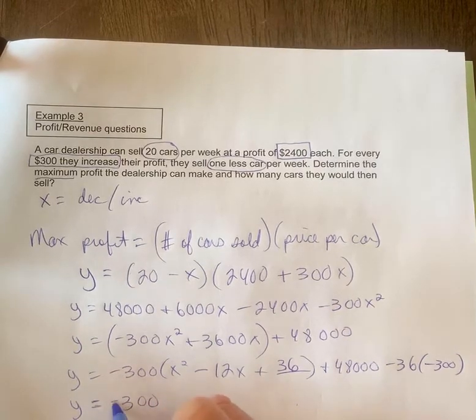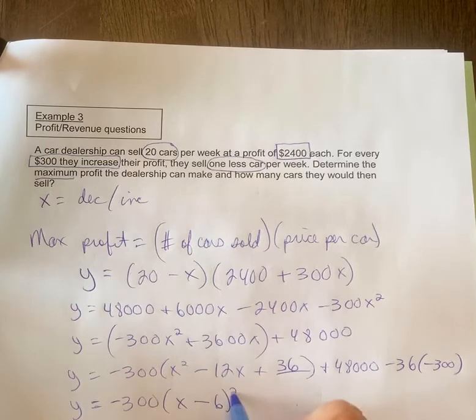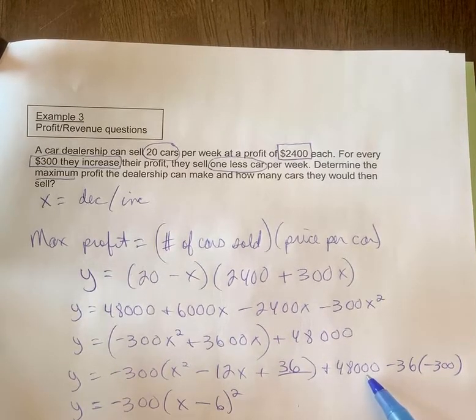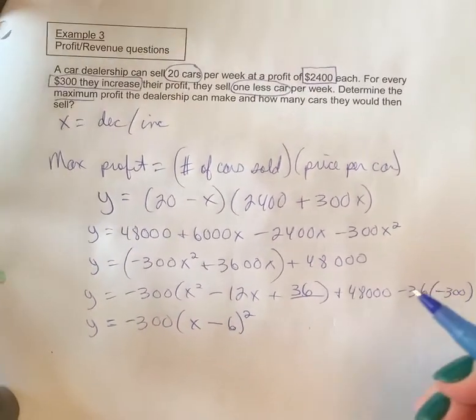All right, I started writing this out already—I was getting ahead of myself here. So this is x minus 6 squared because you square root 36 to get 6. 48,000, okay, add this now.